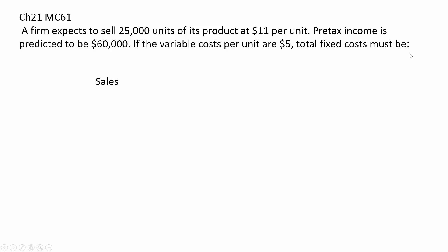Let's set up a contribution margin format income statement and see if we can plug in what we know and solve for what's unknown. Sales minus variable cost equals contribution margin, minus fixed cost equals pre-tax net income.